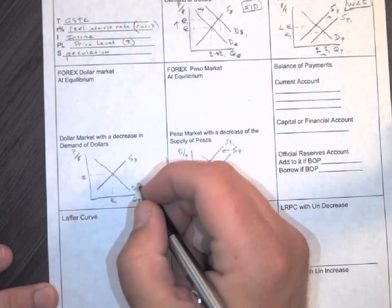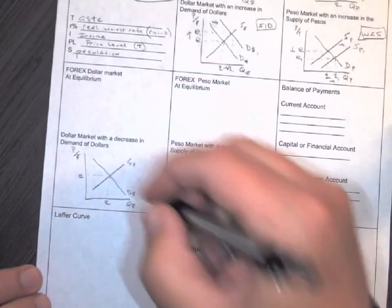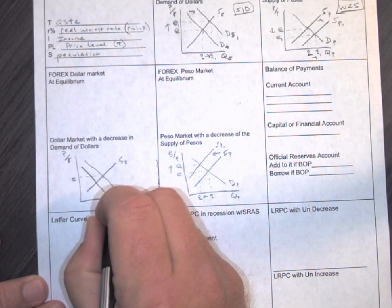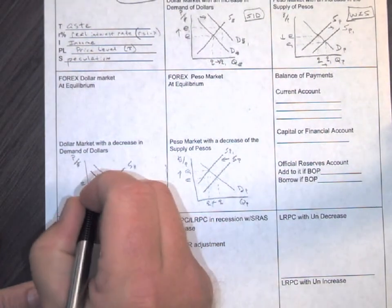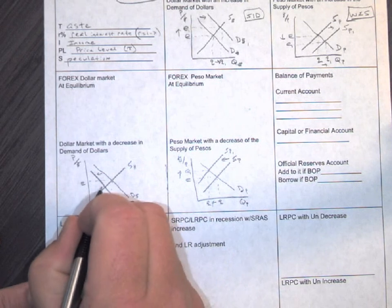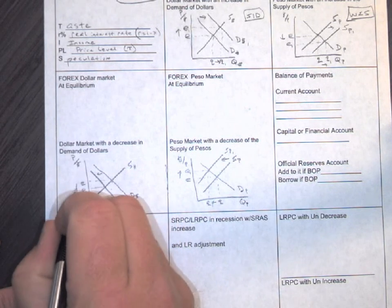Now over here I don't want the dollars anymore. I wanted pesos. So now I'm going to have a decrease in the demand for a dollar. So I go D dollar one. Okay, I have my leftward arrow shift. I have my exchange rate dropping.